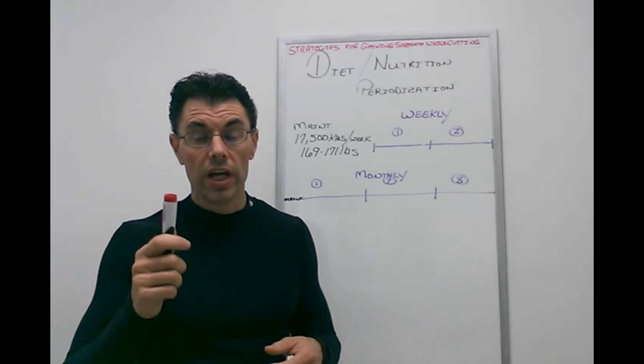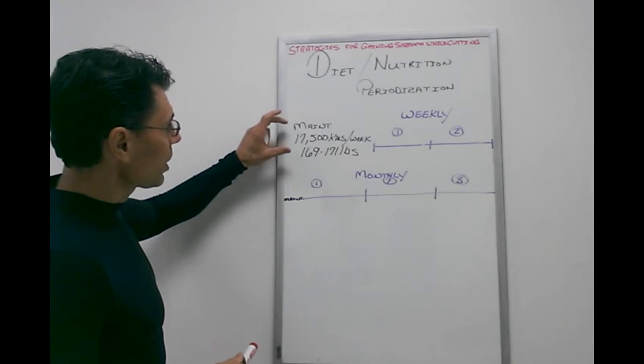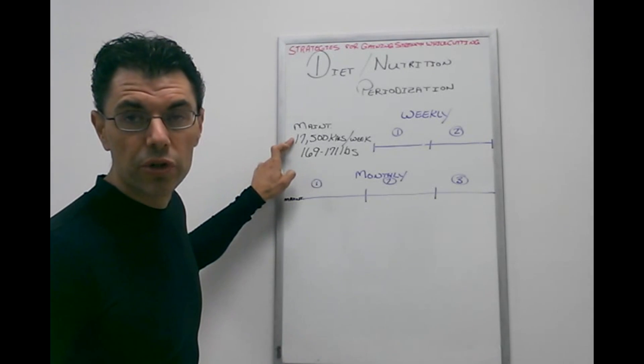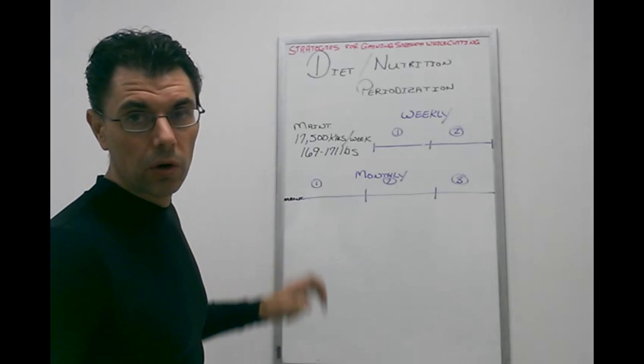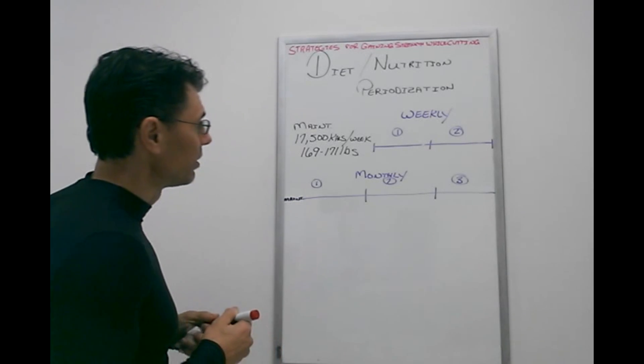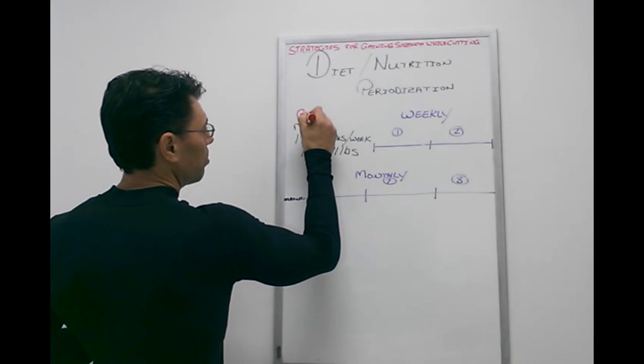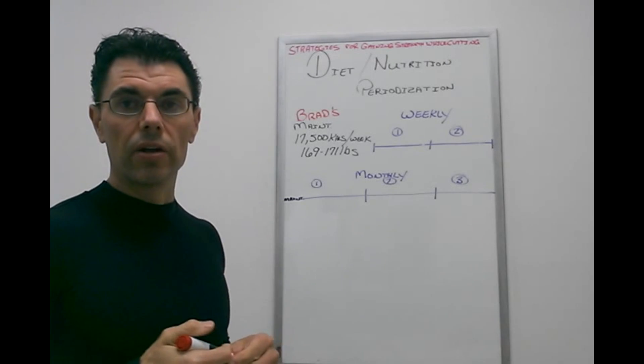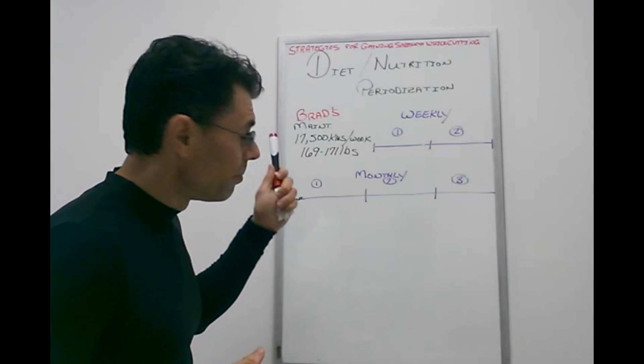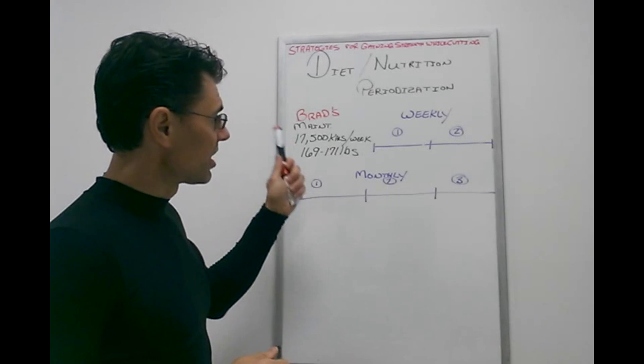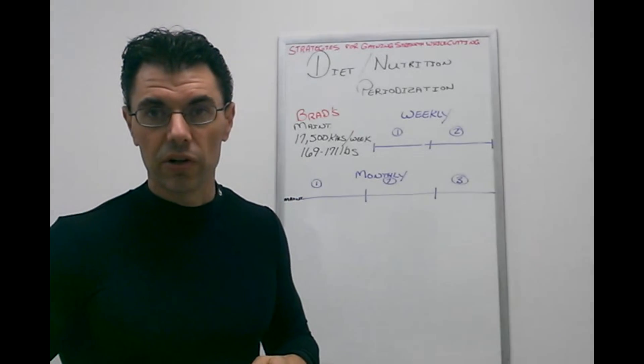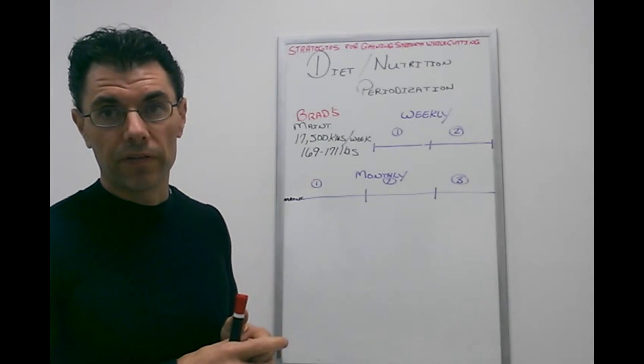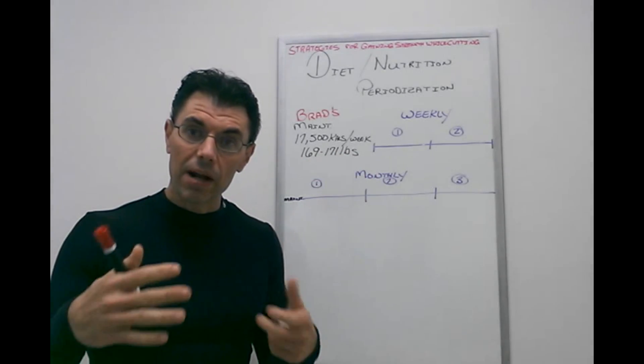This is how I like to do it and how I recommend clients find their maintenance. It's not rocket science but it does take time. It is tedious to do if you want to do it right. Here we've got maintenance 17,500 calories per week, roughly 2,250 a day if you wanted to follow a daily format as opposed to a weekly format. This just happens to be Brad's maintenance at 169 to 171 pounds.